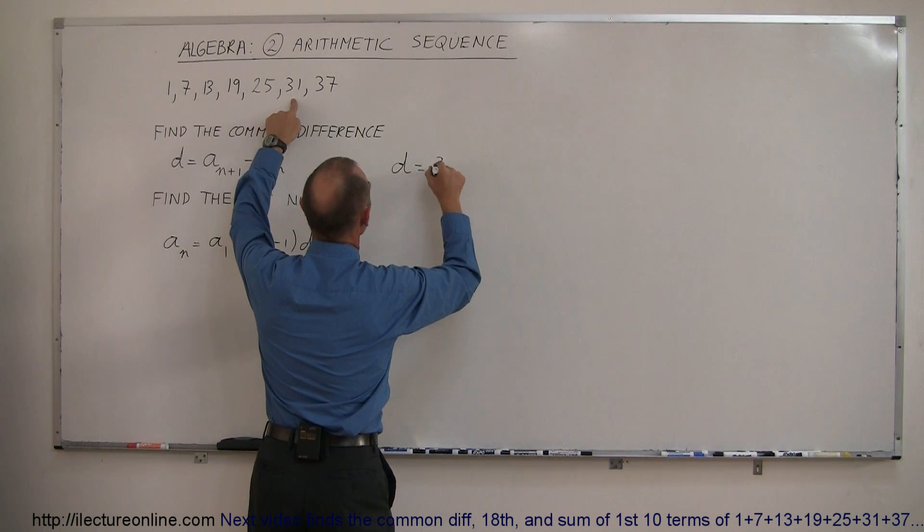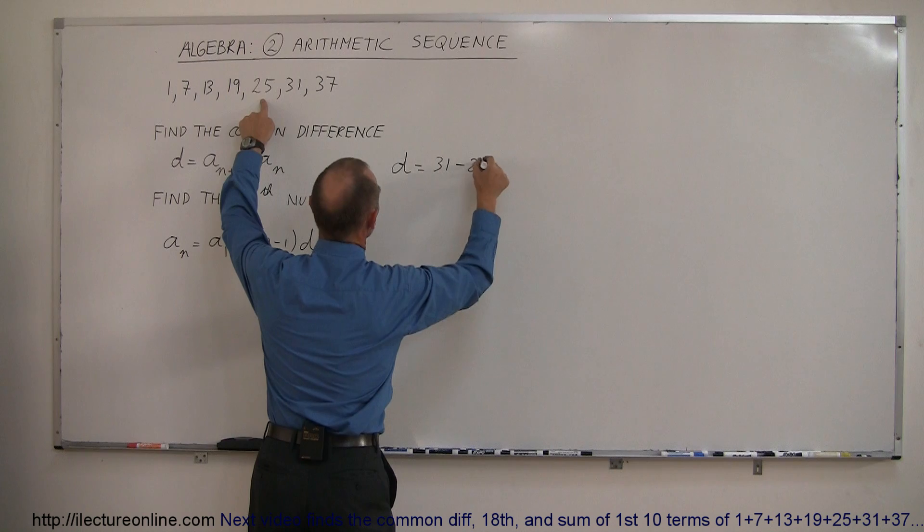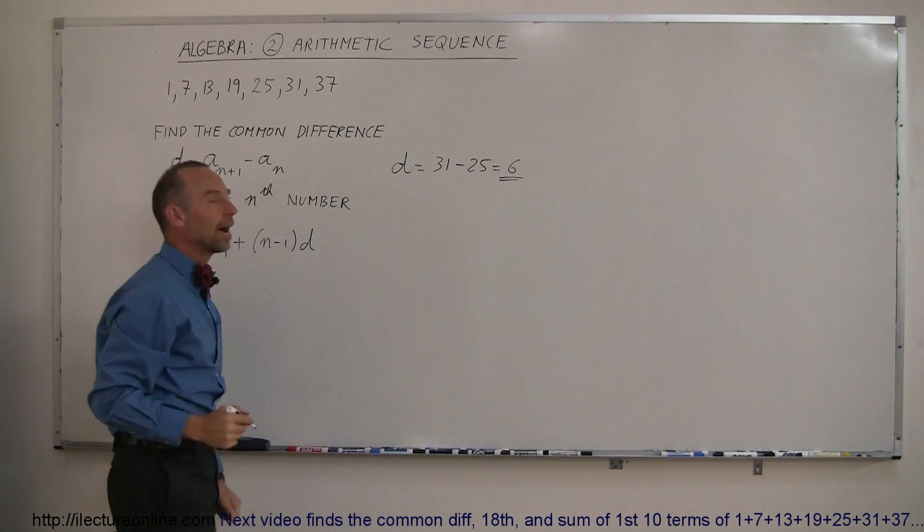So as an example, d is equal to, let's say, 31 minus the previous one, which is 25, which is 6. So 6 is known as the common difference.